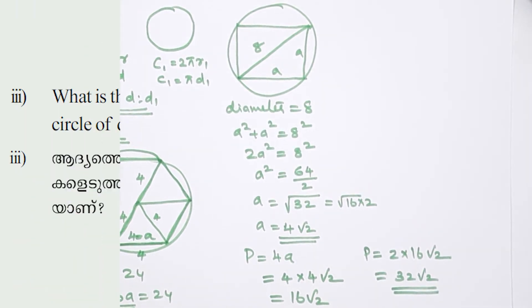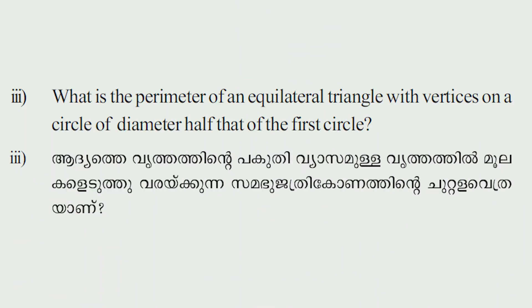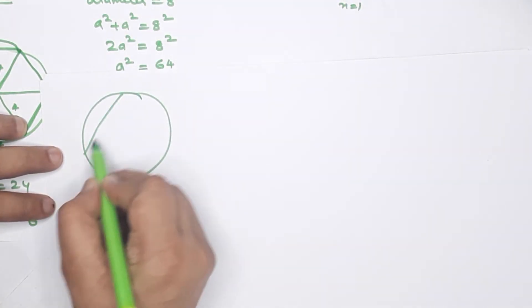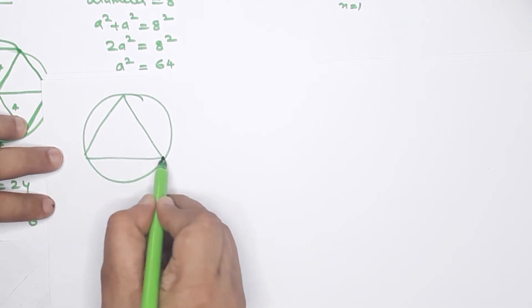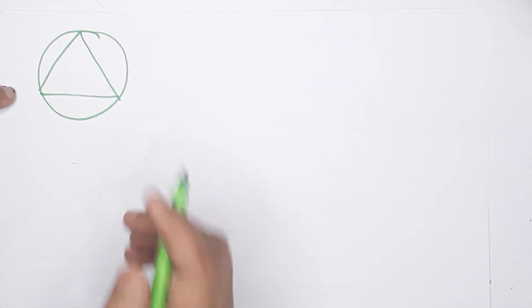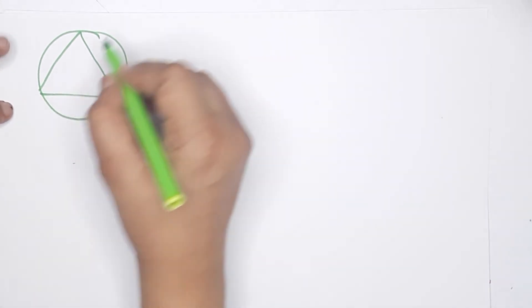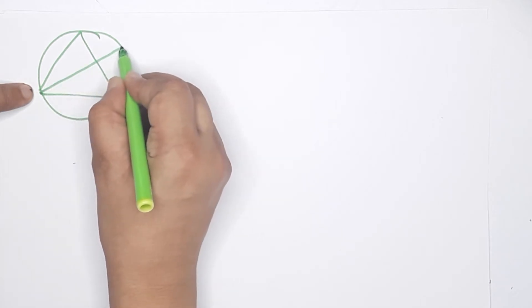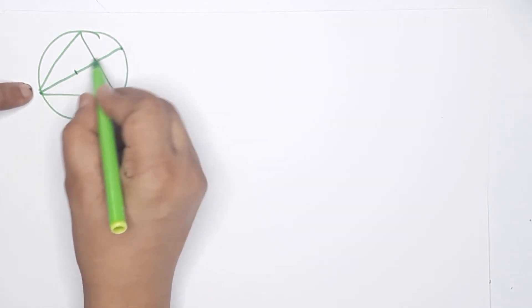Next: What is the perimeter of an equilateral triangle with vertices on a circle of diameter half that of the first circle? The first circle had diameter 8, so half the diameter is 4, giving a radius of 2. We join the center to form the triangle.